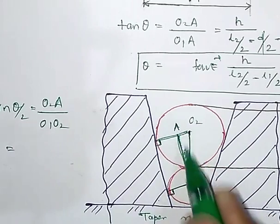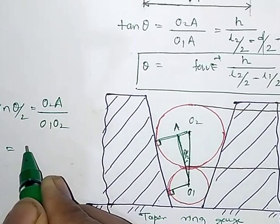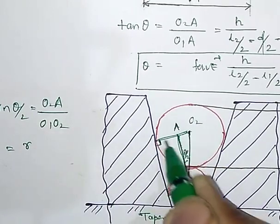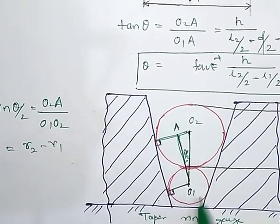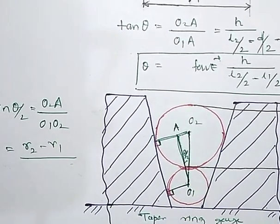What is O2A? It is nothing but radius of this roller minus radius of this roller. That is, let us call the radius R2 minus R1, divided by O1O2 which can be found out from this H1 and H2.